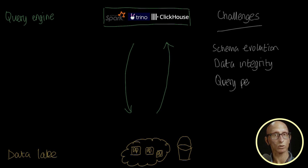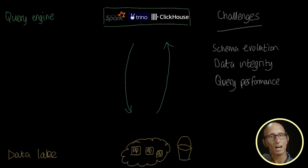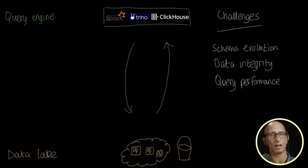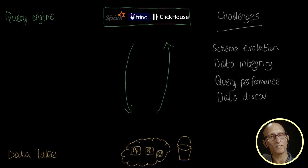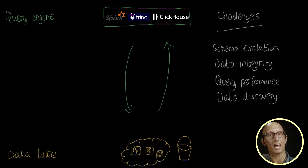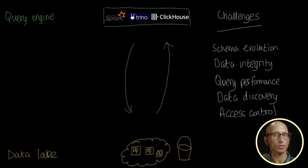The next challenge is query performance. As we add more Parquet files, our queries get slower as the query engine has to scan all the files to determine whether they're relevant for a query. Then there's data discovery — over time we store different types of data in the data lake, but how do we know what's in there? And finally, access control: how do we make sure that users can only see the data that they should be able to see?